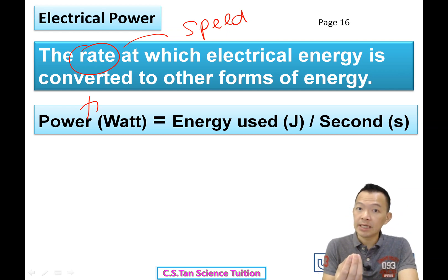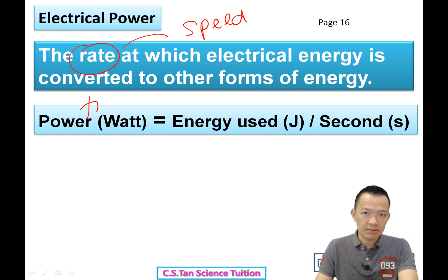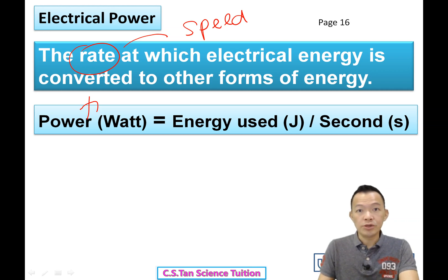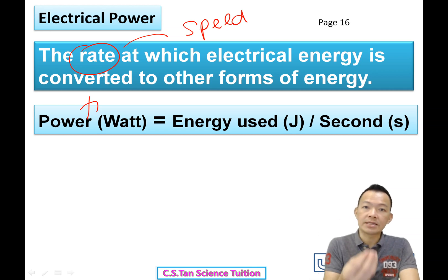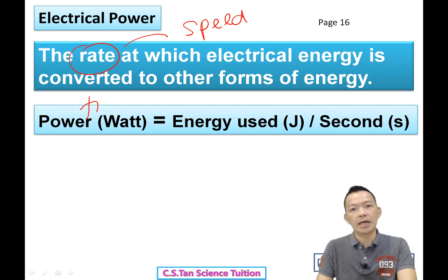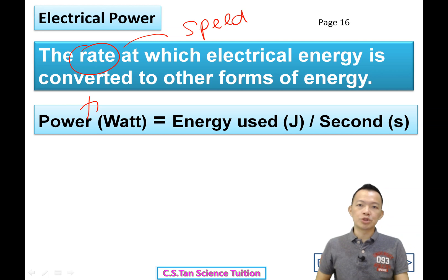Power is measured in joules per second. In one second, if the electrical energy used is more, that means your electric appliance is working very fast. Using more energy per second means the power is very high. So power equals joules per second.